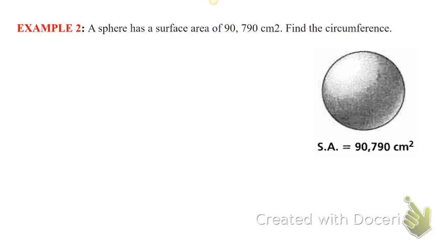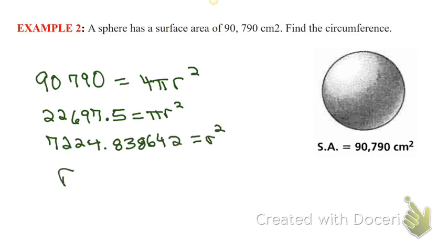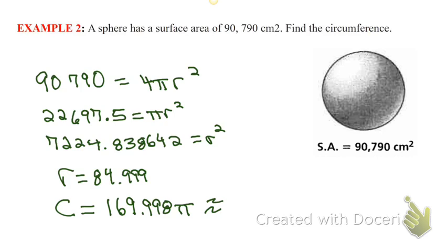A sphere has a surface area of 90,790 centimeters squared — find the circumference. First we've got to find the radius. Set that total surface area equal to 4 pi r squared. Divide 90,790 by 4 using your calculator, then divide by pi, and take the square root. Now that I have the radius, I can find the circumference of the great circle by just doubling the radius and multiplying by pi. Since this is already a decimal, we're going to multiply out the pi.